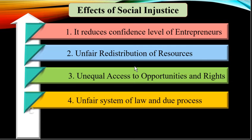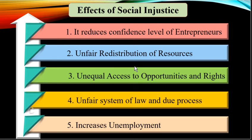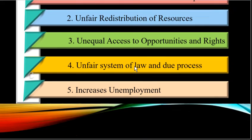Next is an unfair system of law and due process. Social injustice is immoral and criminal in nature. The legal system needs to be fair and the process of providing justice should be responsibly fast. It is necessary to punish criminals who support and practice social injustice, and legal action must be taken in time so that the victim recovers. In the absence of a good legal system, social injustice remains and creates problems for entrepreneurial growth. Lastly, social injustice increases unemployment as some people may not get jobs despite being capable.